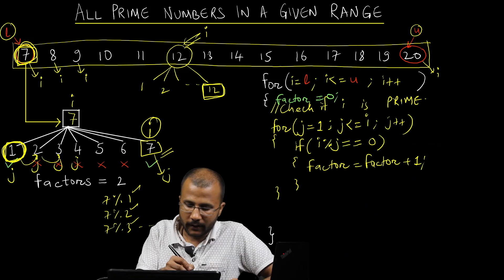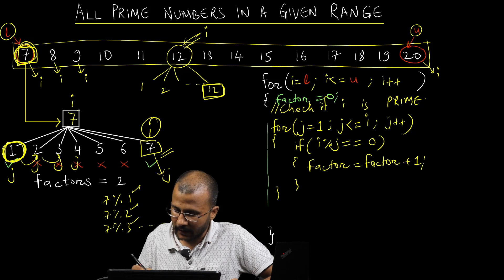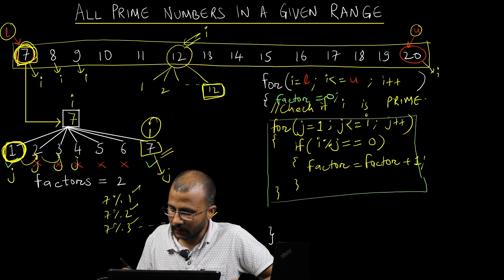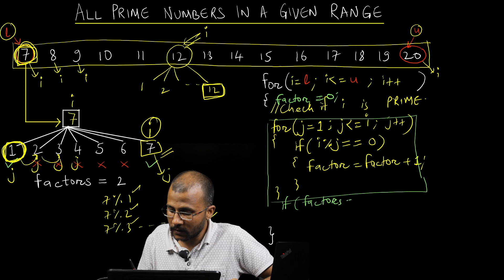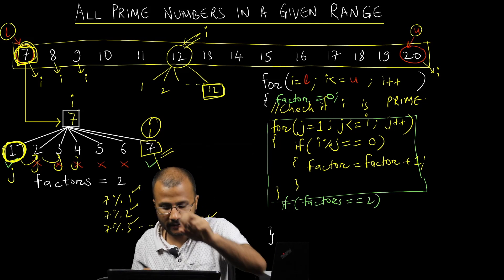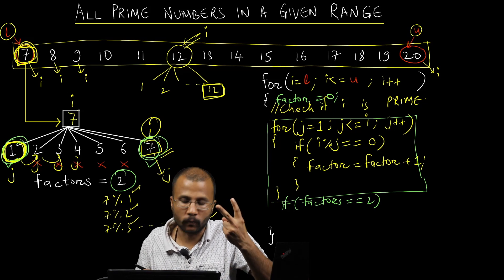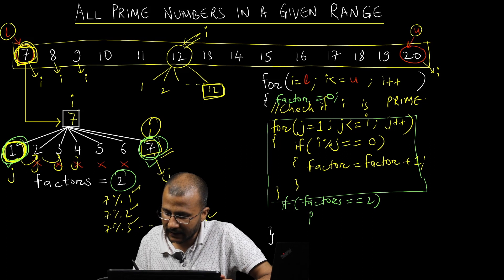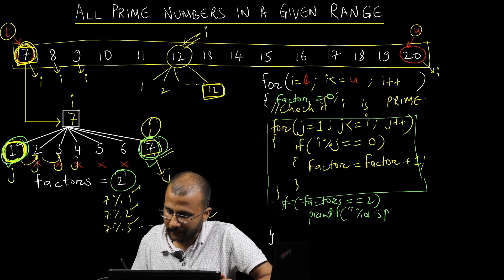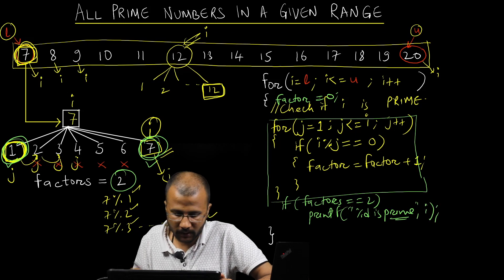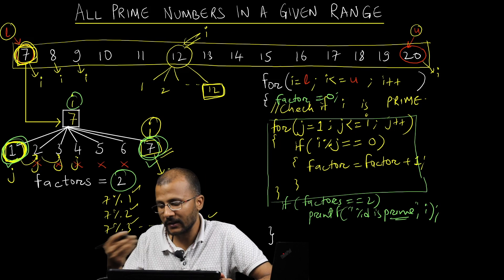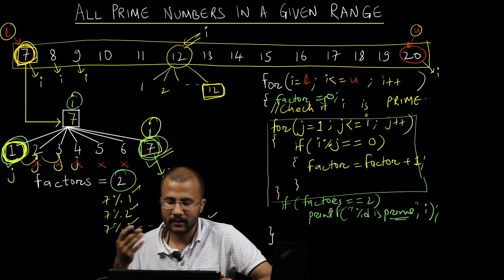Once this inner loop is done, I write an if statement: if number of factors equals equals 2. If I exactly find two factors — like in case of 7, where 1 is a factor and 7 is a factor so there are 2 factors — then I can say that number is prime. So I print: '%d is prime', where %d is nothing but i. Whenever it's prime, I display that the number is prime; otherwise it is not displayed.